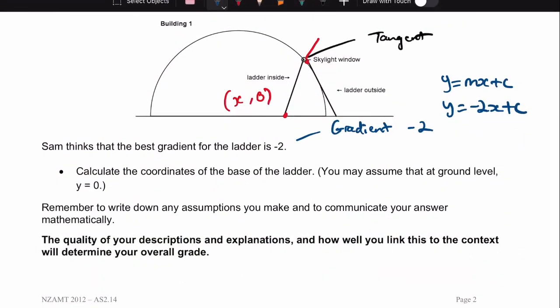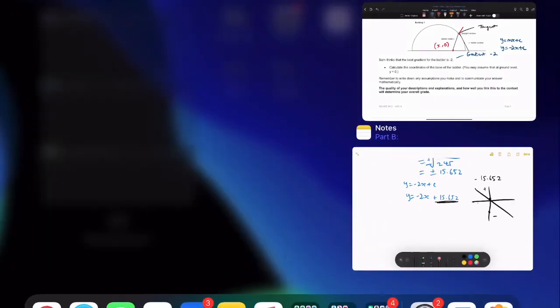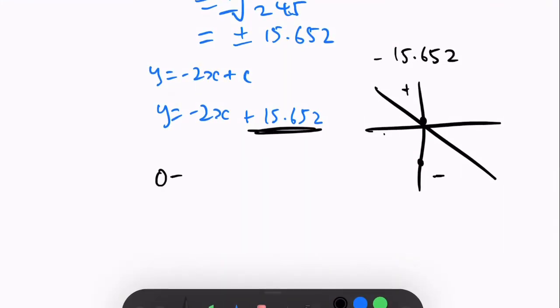because we identified that it would be x something 0, so we just put in y and get x.